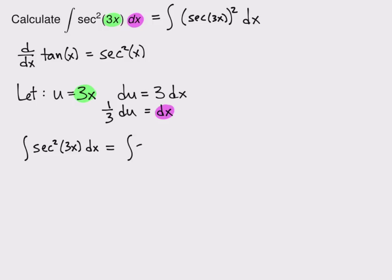So this turns into the integral of secant squared u, and the dx becomes 1 third du. That's good, there's no more x's left.